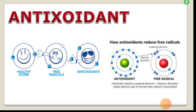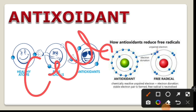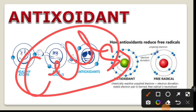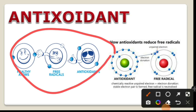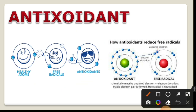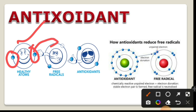Antioxidants protect the body's cells — keeping them healthy and energetic. Healthy atoms have complete electrons in their cells. When a free radical cell has an unpaired electron, it tries to steal an electron from a neighboring healthy cell, causing a chain reaction of damage.